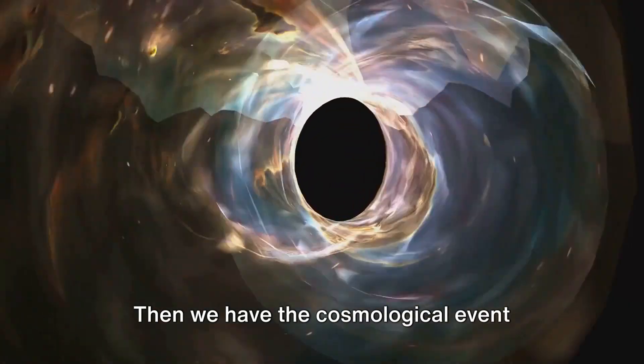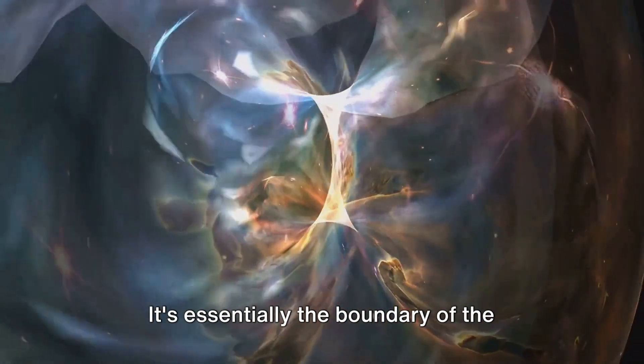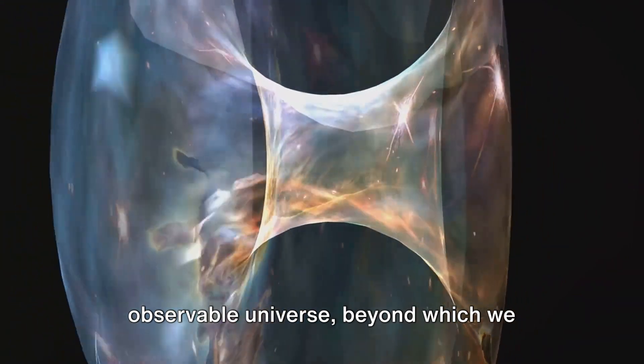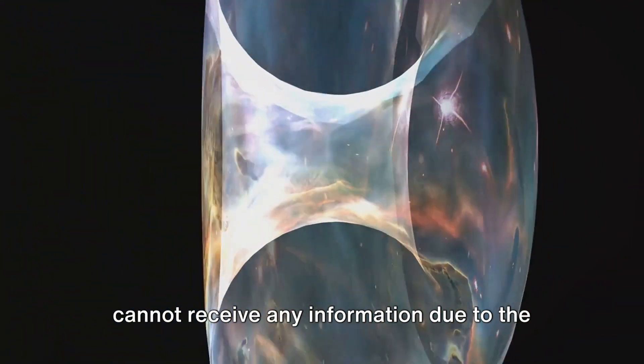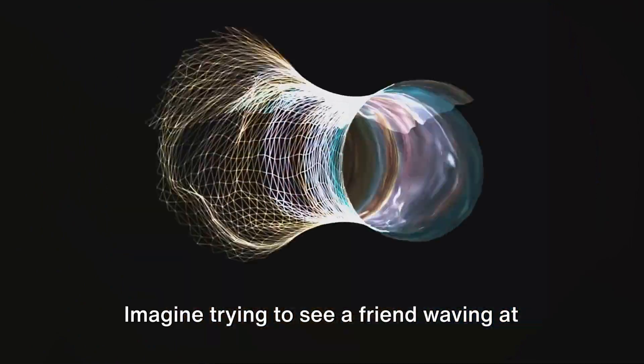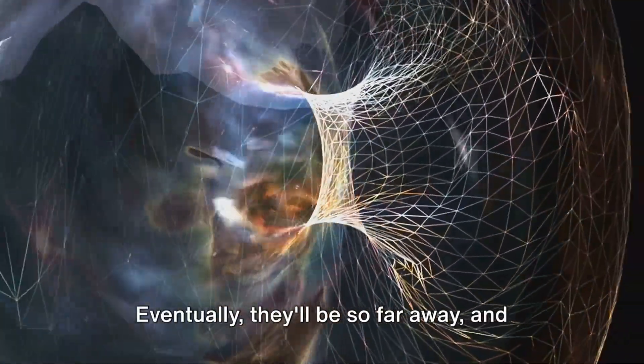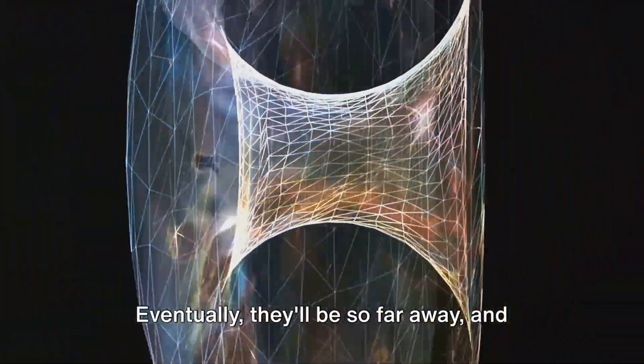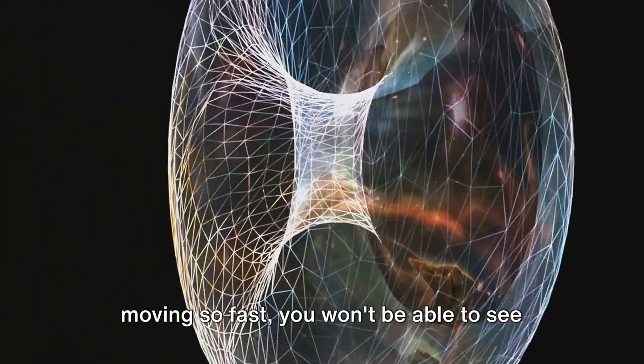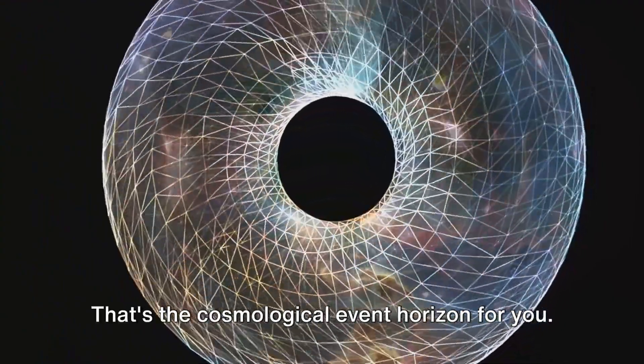Then we have the cosmological event horizon, which is not as ominous as it sounds. It's essentially the boundary of the observable universe beyond which we cannot receive any information due to the universe's expansion. Imagine trying to see a friend waving at you from a car moving away at an ever-increasing speed. Eventually, they'll be so far away and moving so fast, you won't be able to see them anymore. That's the cosmological event horizon for you.